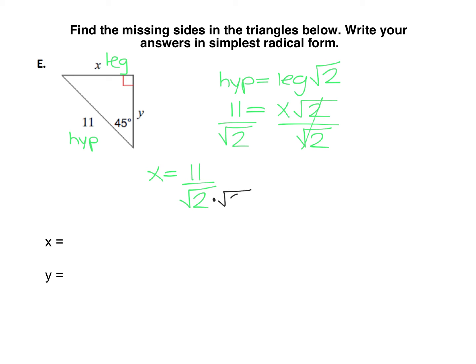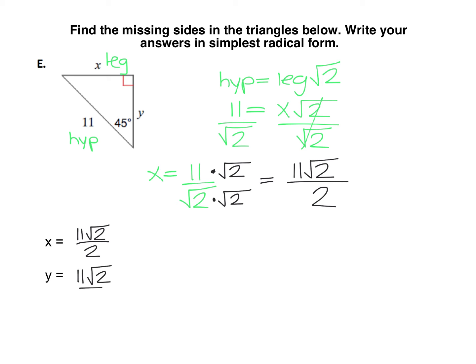To get rid of the root 2 in the denominator, we multiply both the numerator and denominator by square root of 2, which makes 11 root 2 on top, and in the denominator, root 2 times root 2 is just 2. Since 11 divided by 2 doesn't divide nicely, we're just going to leave it as a fraction. So for our x value, it would be 11 root 2 over 2, and our y would be the same because the legs are congruent — so 11 root 2 over 2.